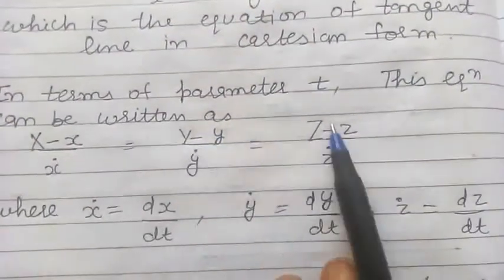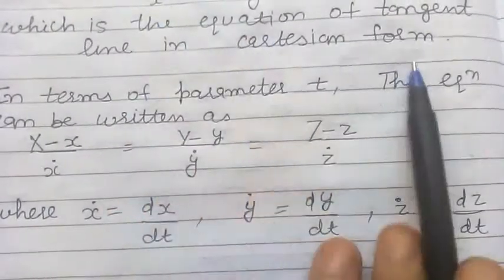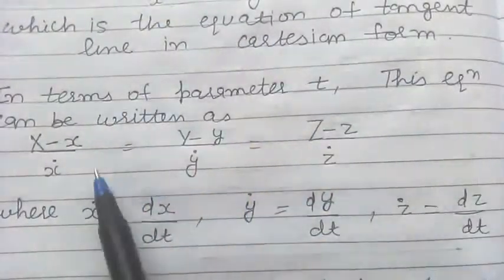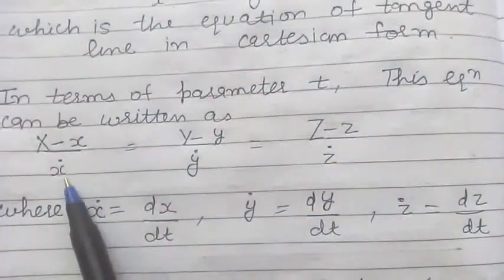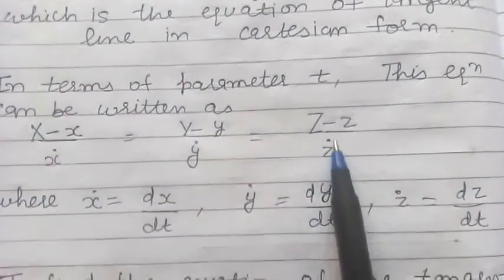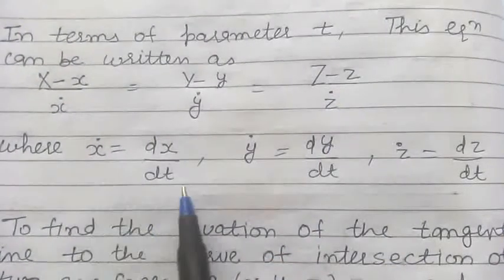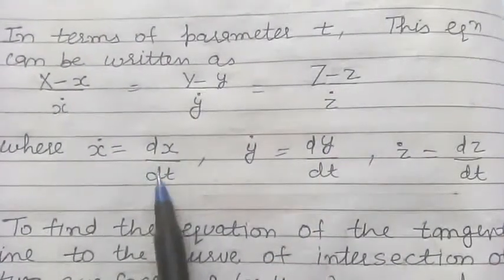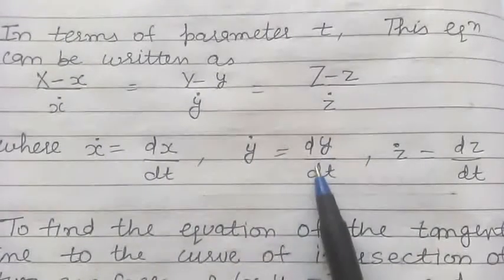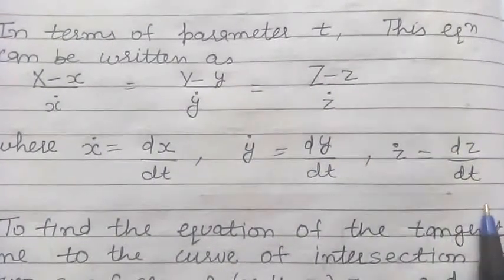If the given curve is in terms of parameter t, then in the above equation the dashes can be replaced by dots, where x-dot, y-dot, z-dot denote derivatives with respect to parameter t: x-dot = dx/dt, y-dot = dy/dt, and z-dot = dz/dt.